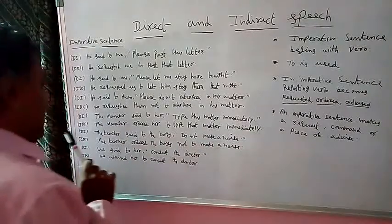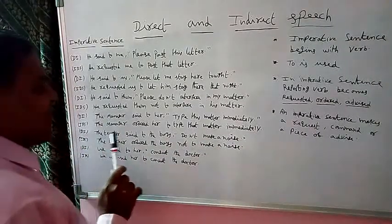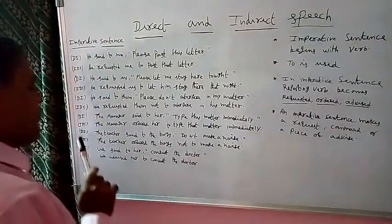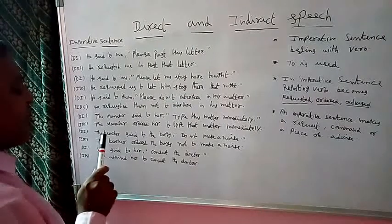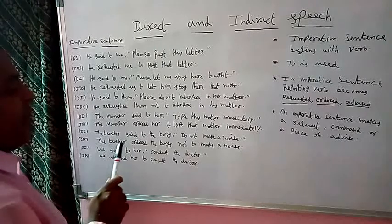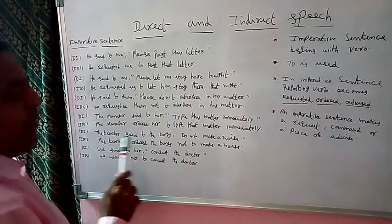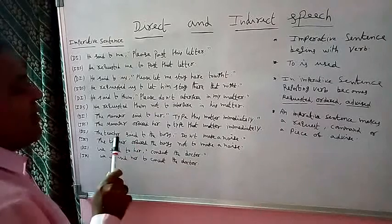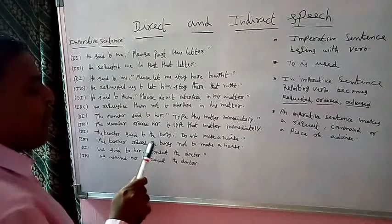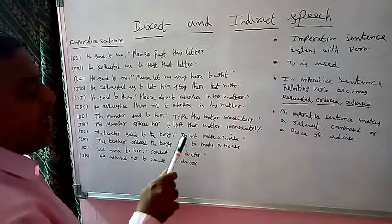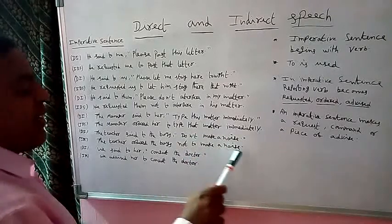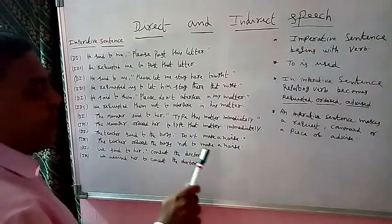The next direct speech example is: The teacher said to the boys, "Don't make a noise." The subject is 'the teacher', and the same subject must be written in indirect speech. The reporting verb 'said to' becomes 'ordered', because the meaning of the sentence is an order. The object is 'the boys', and 'don't' becomes 'not to'. The indirect speech is: The teacher ordered the boys not to make a noise.